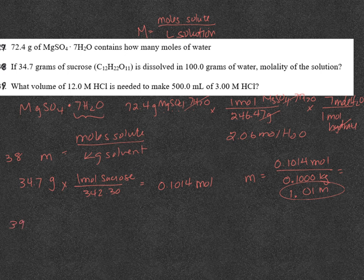39 is molarity by dilution. So if you are given two molarities, one volume, or two volumes, one molarity, you're going to use M1V1 equals M2V2.